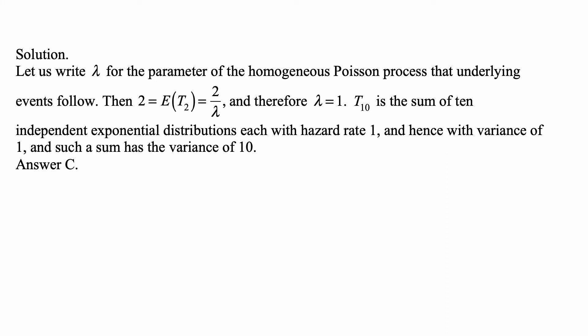And here's the solution. Let us write lambda for the parameter of the homogeneous Poisson process that the underlying events follow. We are told that E(T_2) is 2. We know that it equals 2 over lambda, and since it also equals 2 from the problem, therefore lambda is 1.